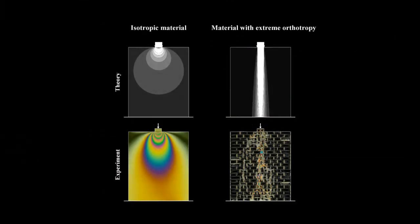In the second model, the masonry is treated as a continuous elastic material with extreme orthotropy. In the upper part, we show the theoretical stress diffusion in an elastic isotropic material on the left and in a highly orthotropic material on the right. We see in the lower part that the comparison with the experiment is excellent.